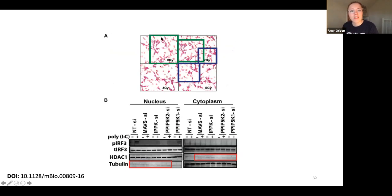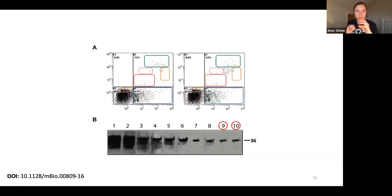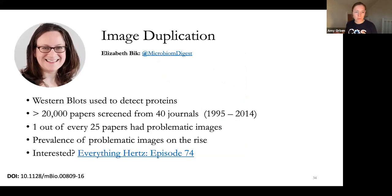What she also spots is where only parts of the image are duplicated. So, again, if you look at the green square, you see that actually this is the same picture, just smaller. And this is, again, in a published paper. Or you have way more complicated duplication designs. Here, for example, she spotted that these two were actually duplicated on these two lines. So she screened these 20,000 papers for image duplications. And she found that actually one out of every 25 papers had some sort of problematic images. And that the prevalence of problematic images are on the rise. So this is a really great podcast episode with her.